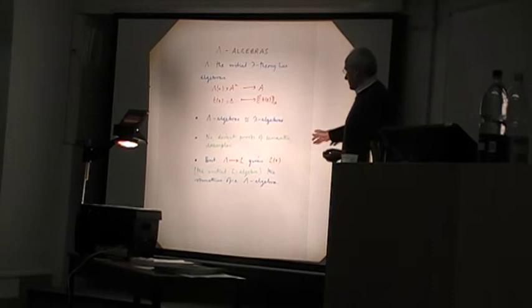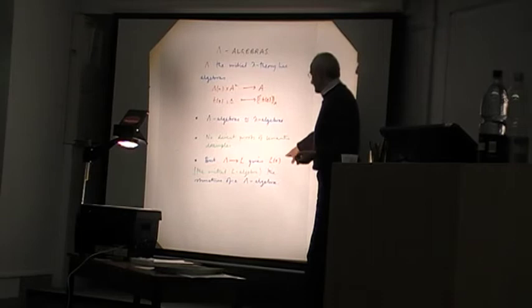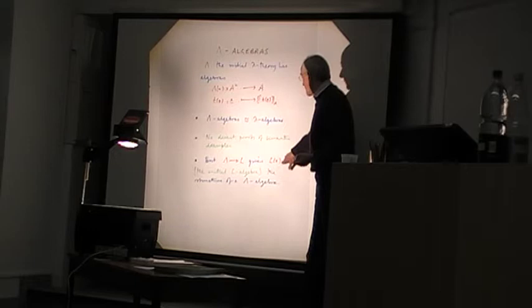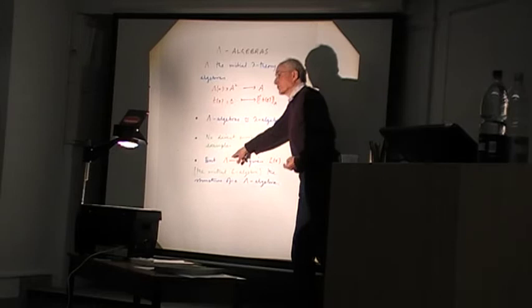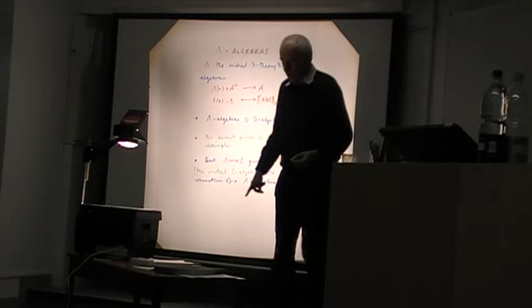On the other hand, whenever I've got a lambda theory in the previous sense, its initial algebra, the L_0, free on no generators, because there's a map from here to here, is automatically, it carries the structure of a lambda algebra. So there's a way of going from lambda theories to lambda algebras. So far, so good. The hard thing is to go in the other direction.